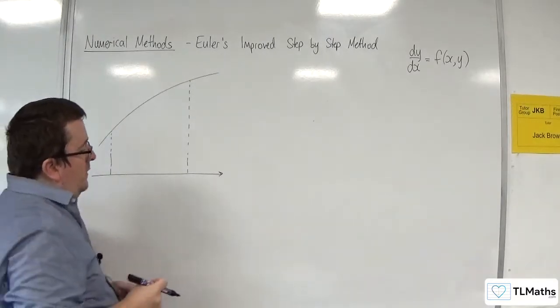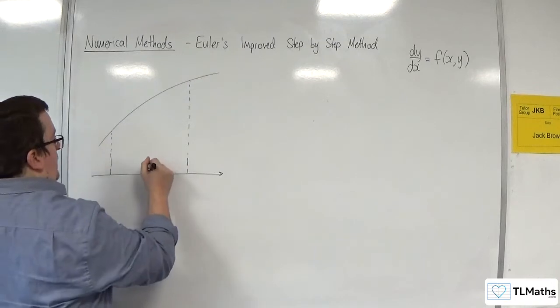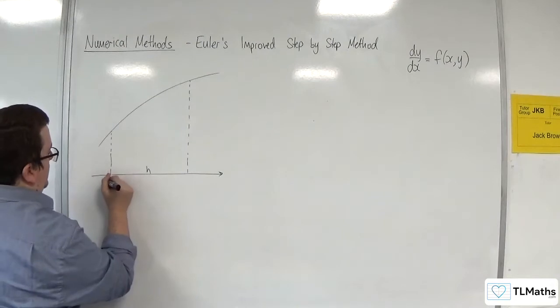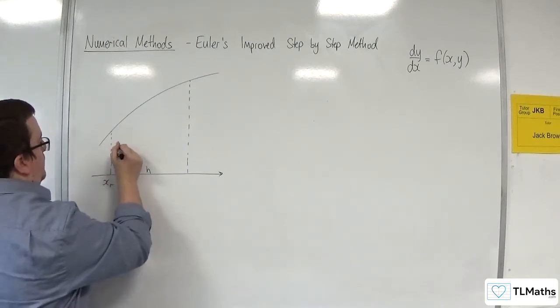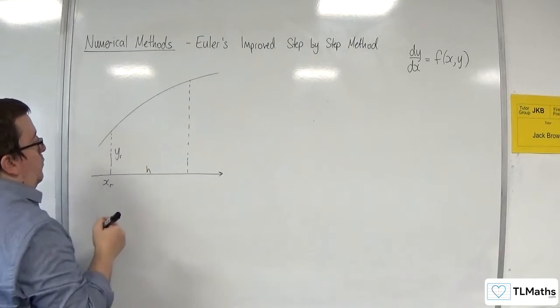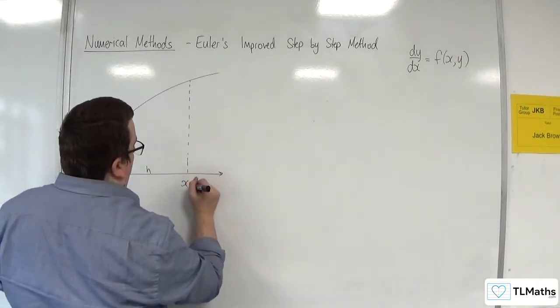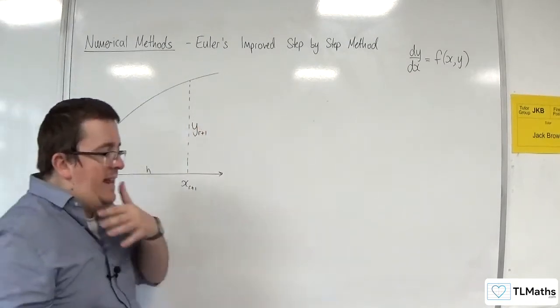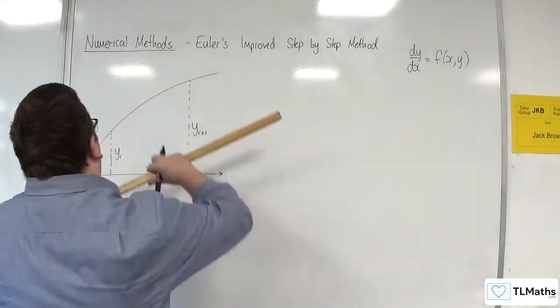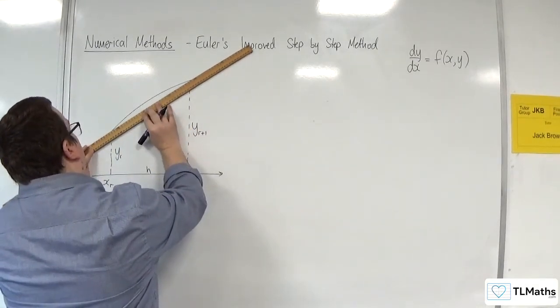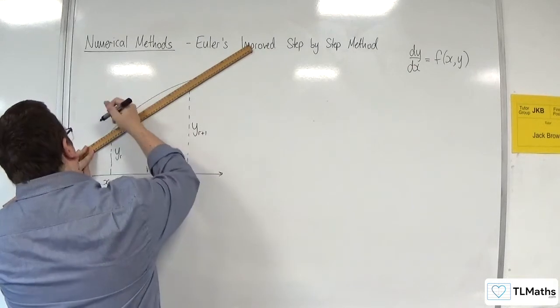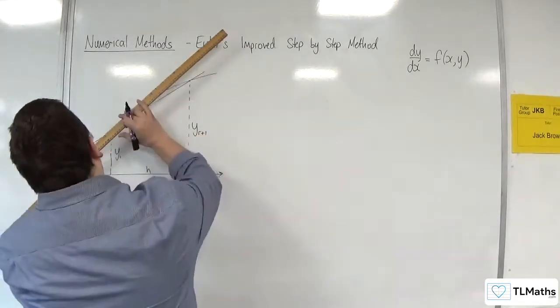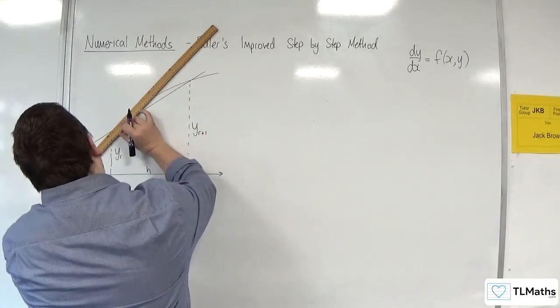So, the idea here is that if this is my step length of H, and this is XR, and that would be YR, and this is XR plus 1, and this is YR plus 1, the idea here is that I could estimate the gradient between my two points by using the average of the gradients at those two points.